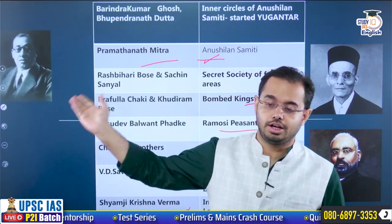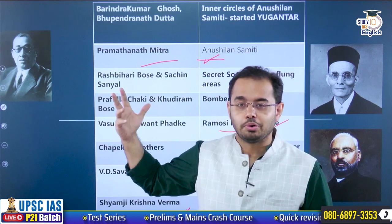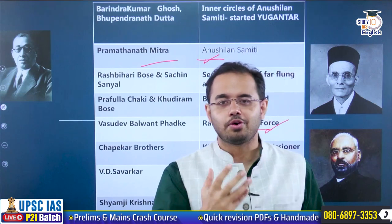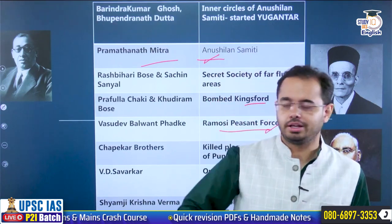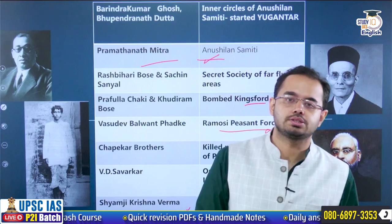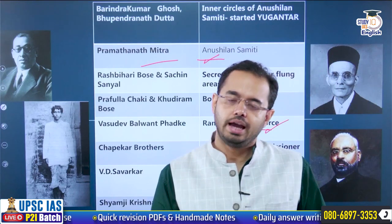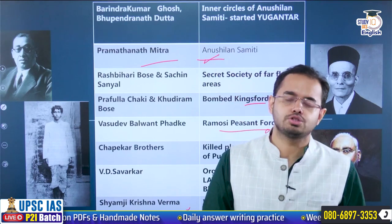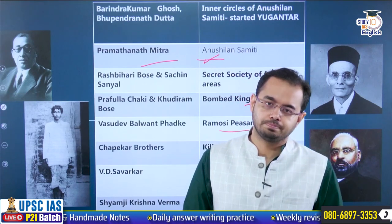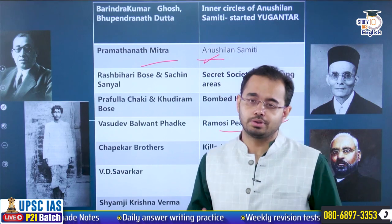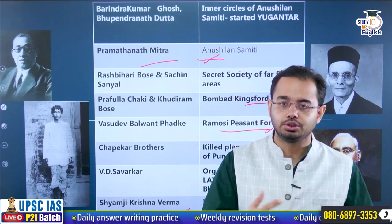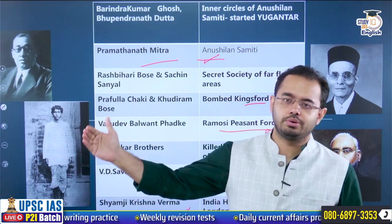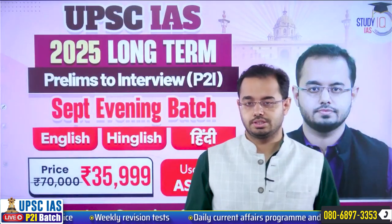Raj Bihari Bose was a person who was never caught by the British — a very inspiring person. Young nationalist Khudiram Bose was hanged on account of trying to assassinate the district magistrate of Muzaffarpur, Kingsford. These were some of the most important revolutionary activism happening during the time of 1905 to 1909. I hope you enjoyed the session.